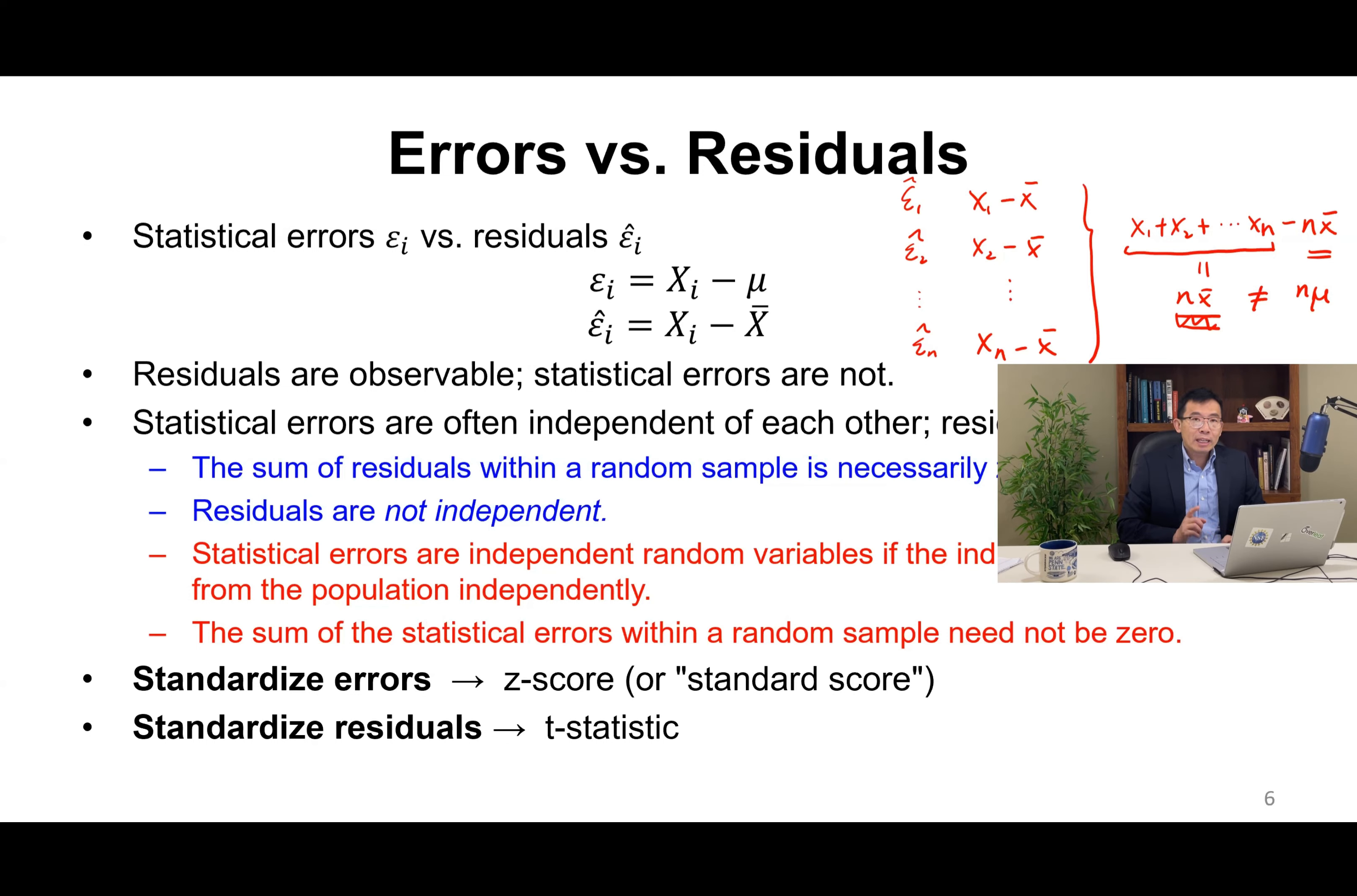If we standardize errors we get z-score or standard score. If we standardize residuals we get t-statistic. Z-score is z equals x minus mu over sigma. If we standardize t, it equals x minus x bar over s.